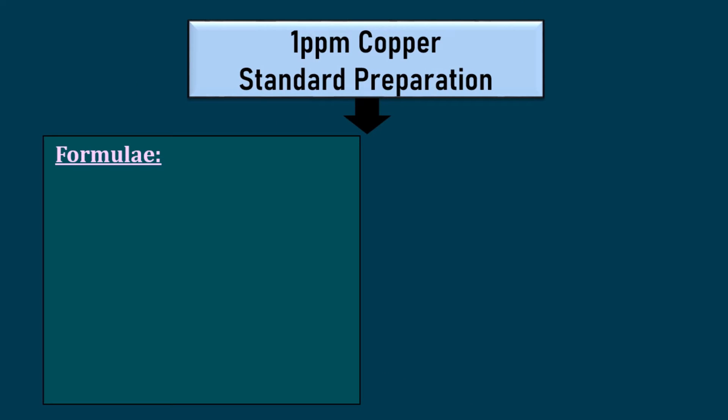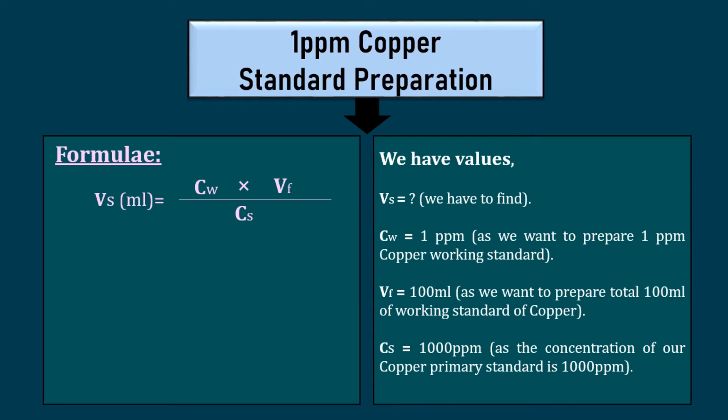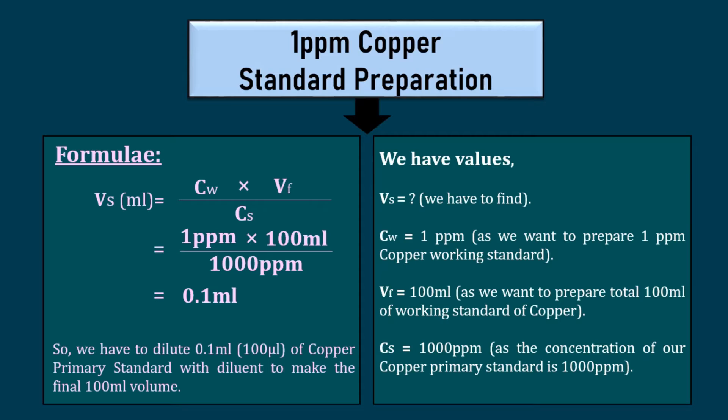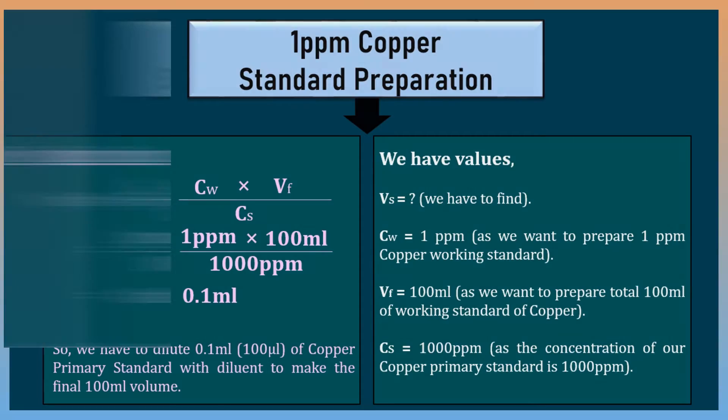Now, we will calculate the amount of copper primary standard needed to prepare 100 ml of copper working standard. By calculating, we found that we need 0.1 ml or 100 µL of copper primary standard to transfer. Let's do it practically.